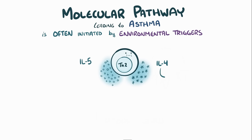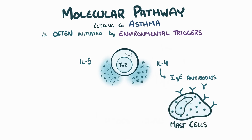For example, interleukin-4 leads to the production of IgE antibodies, which coat mast cells and stimulate them to release granules containing things like histamines, leukotrienes, and prostaglandins.